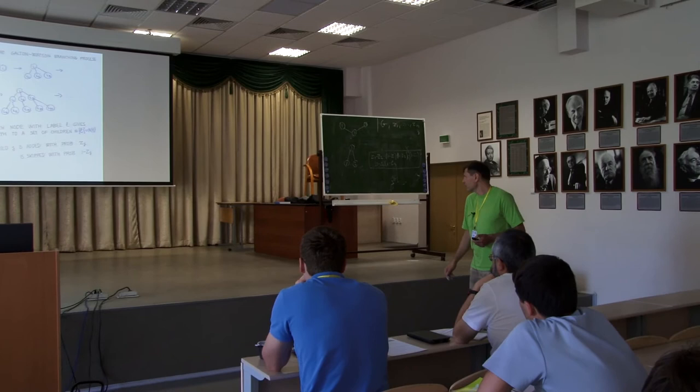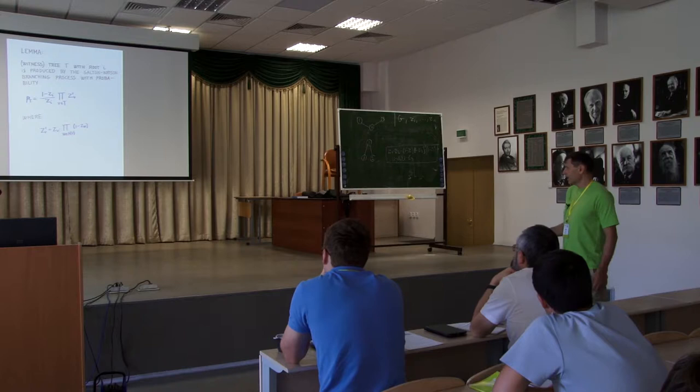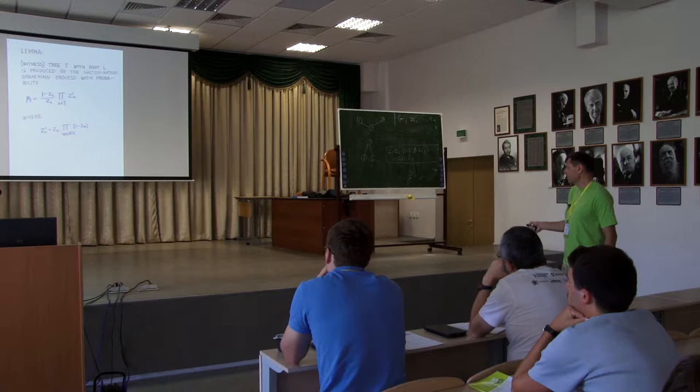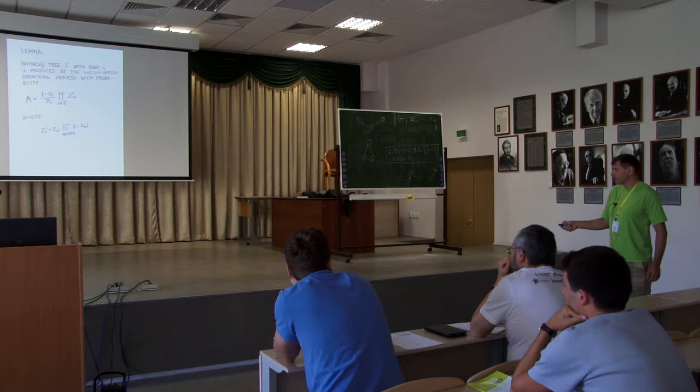If this process dies out — no children bring any more children — it freezes into some tree. That's the Galton-Watson branching process. Here is a lemma which says that the probability that the Galton-Watson branching process yields any fixed tree T is exactly a certain expression.